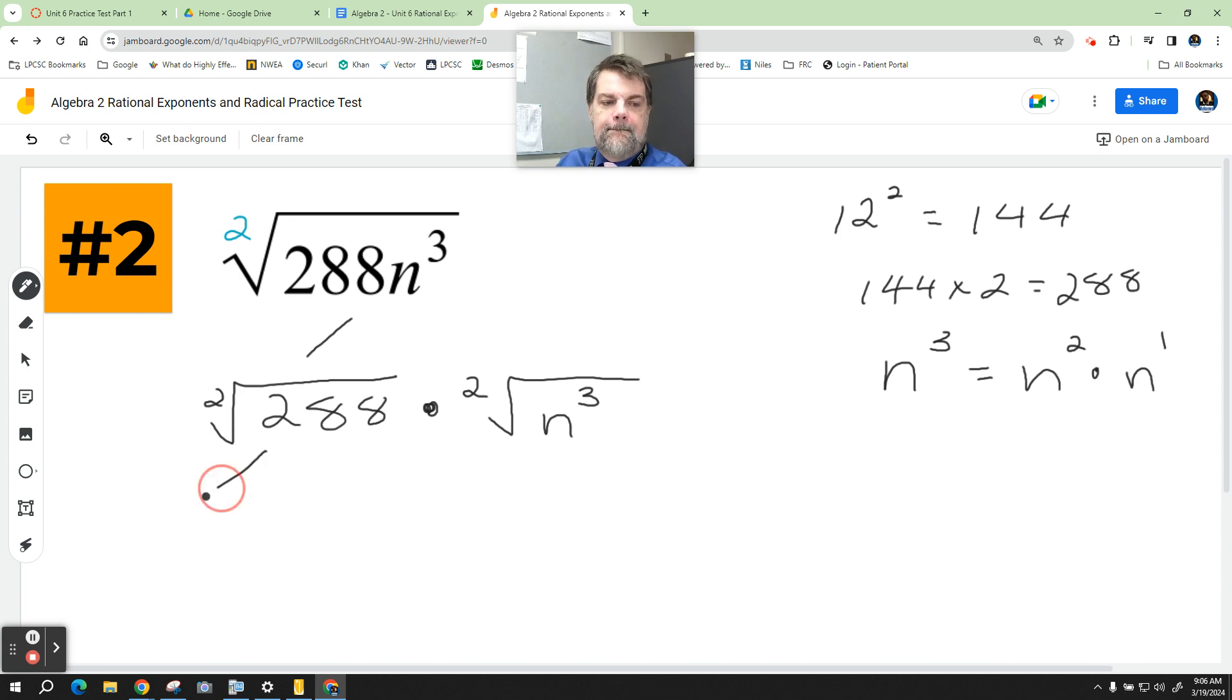So over here, I'm going to split this up into the square root of 144 times the square root of 2, and we'll put our little twos here, times the square root of n squared, and then the square root of n.